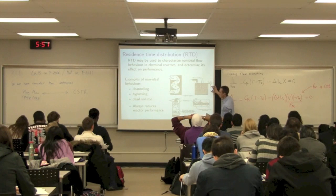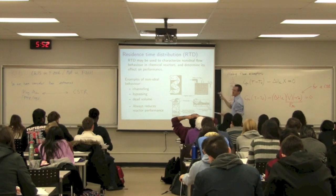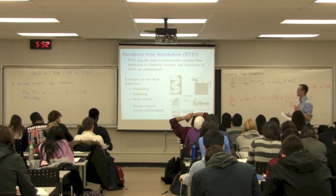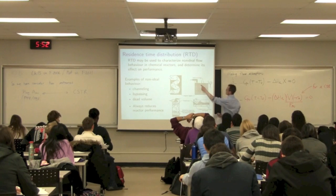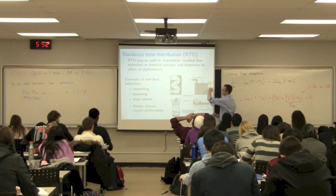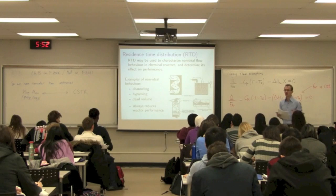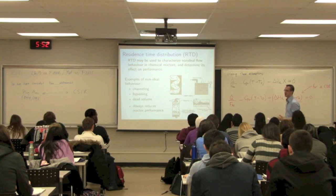Those particles there will have ample time to react, and they will leave with a much higher conversion. So what's really leaving here is a concentration CA, certain conversion X, but it's the blend of a variety of particles. If we had some way to ask every particle how long did you spend in the reactor, you would find a distribution. Some particles have spent a very short time in the reactor, other particles have spent a really long time in the reactor. That's clearly going to affect the conversion.